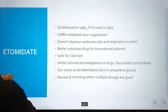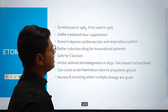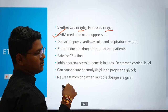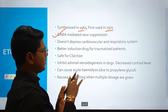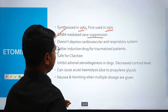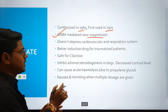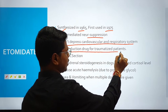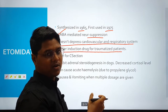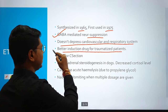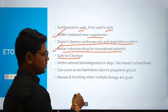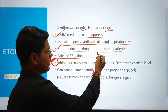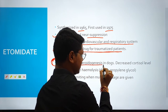Next is etomidate. Etomidate was first synthesized in 1965 and first used ten years later in 1975. It has the same mechanism of action as barbiturates — GABA-mediated neurosuppression. Unlike barbiturates and propofol, it does not depress the cardiovascular and respiratory system. Due to this property, it is a very good induction drug for traumatized patients — whenever there is an emergency, etomidate is very good for induction. It is also very safe for C-sections.